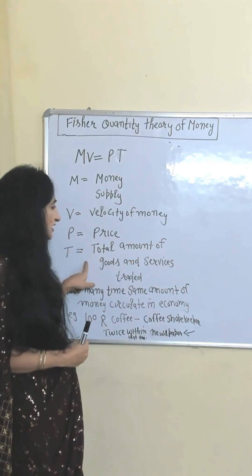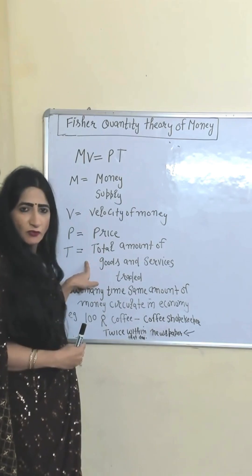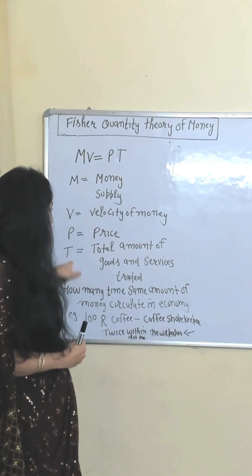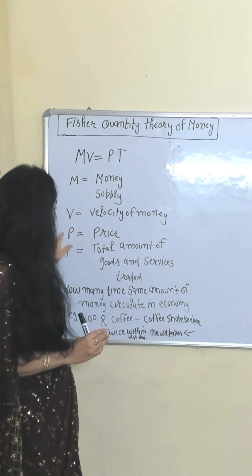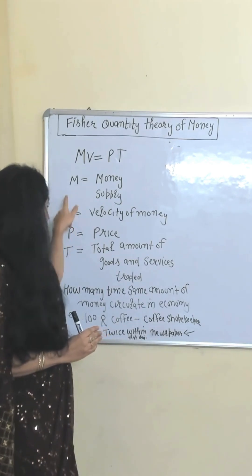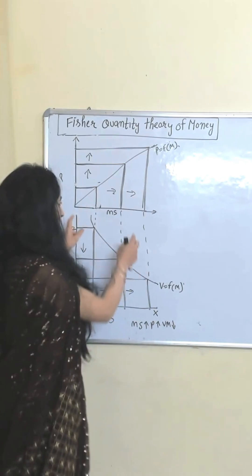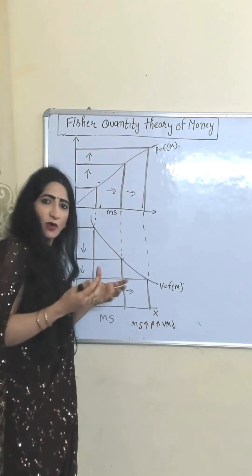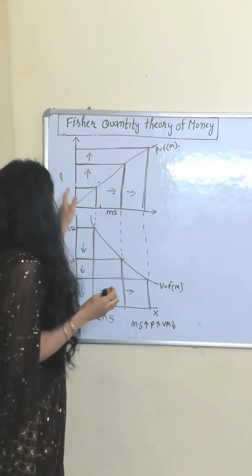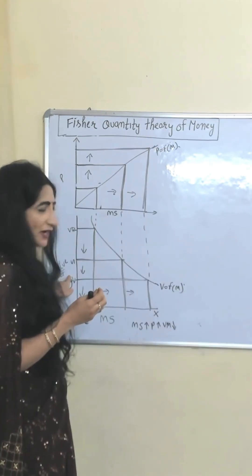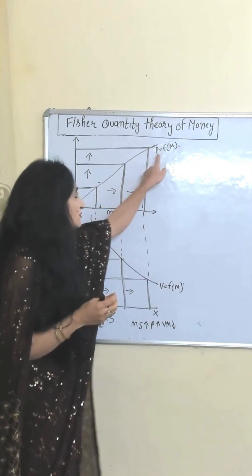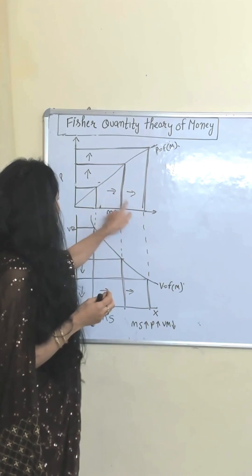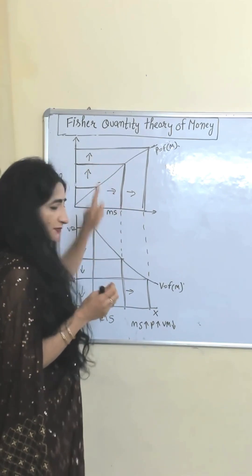P represents price, and T represents the total amount of goods and services traded. If T and V are constant, then P and M have a direct relation — that is, money supply and price. As money supply increases, price also increases.